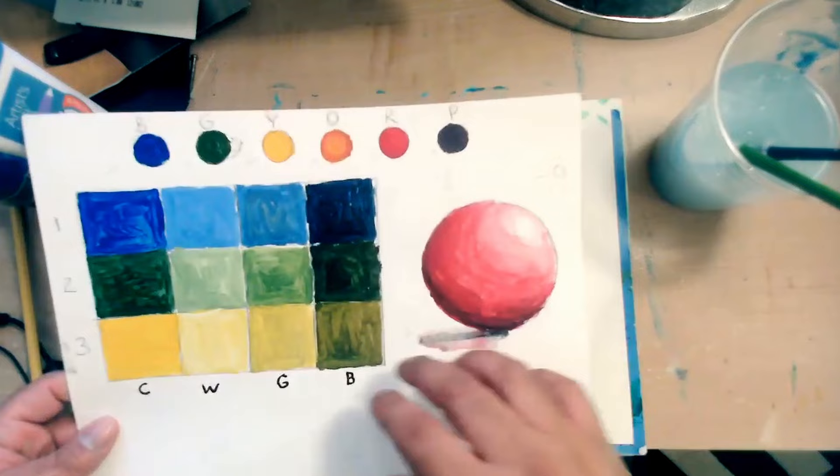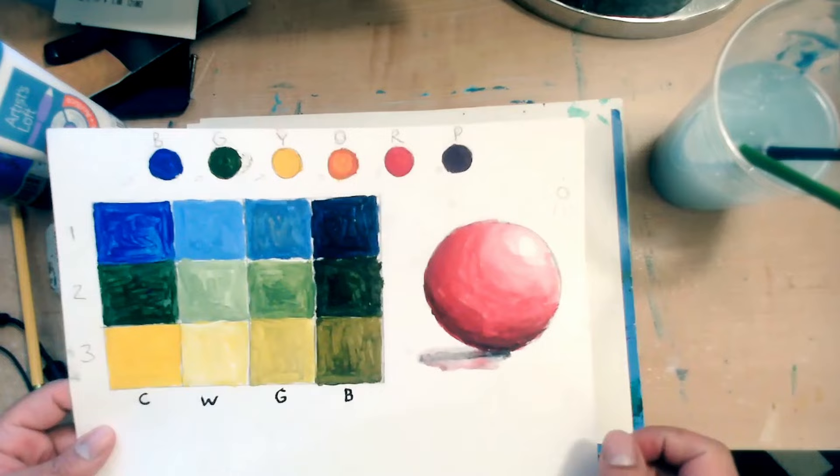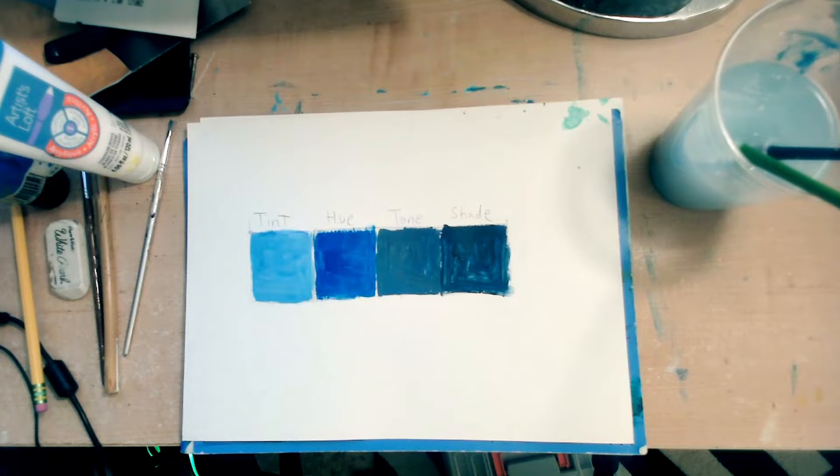Then I also applied it to a ball. Notice that it goes from light to dark. And how will that look like on actual artwork?